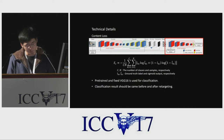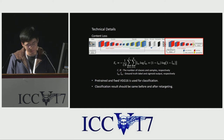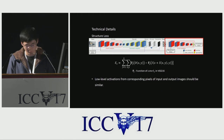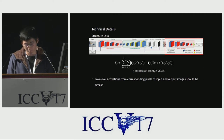Content loss preserves important objects in an image. For that, we utilize classification loss using image-level supervision. We assume that classification results should be the same before and after retargeting if contents are well preserved. Structural loss preserves structural objects and reduces distortions. It is computed by comparing low-level activations between corresponding pixels of the input and output images.